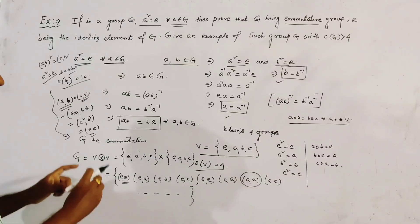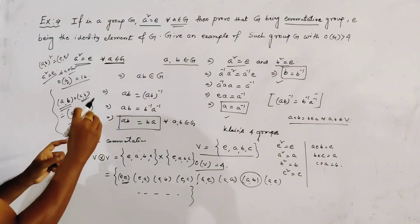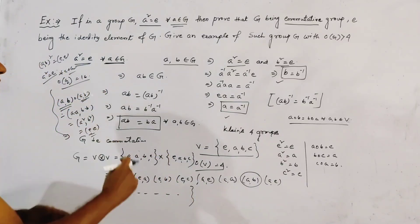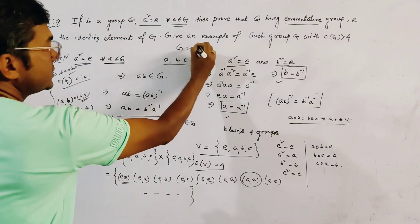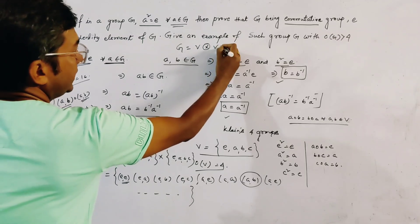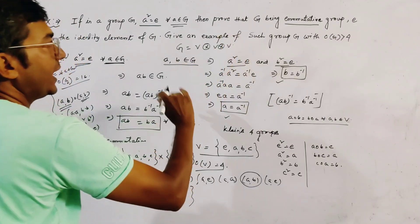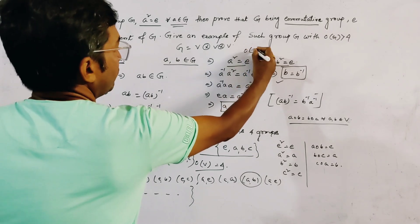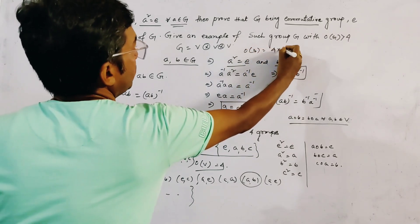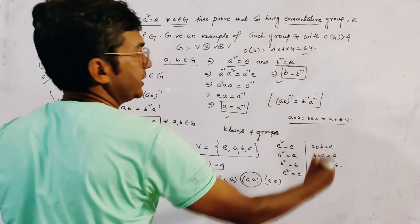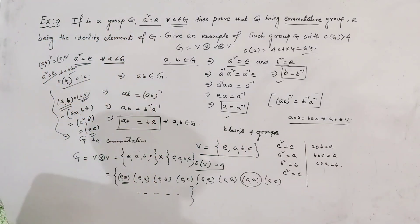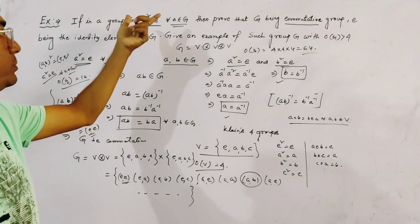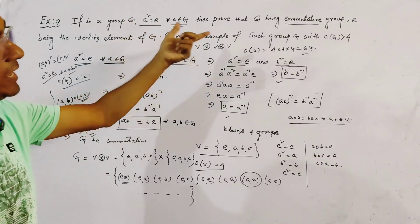If we require a group with order greater than 60, we consider G = V × V × V, the direct product of three Klein four-groups. This has order 4 × 4 × 4 = 64. In general, we can find a group with this property for any desired order by taking further direct products of V.